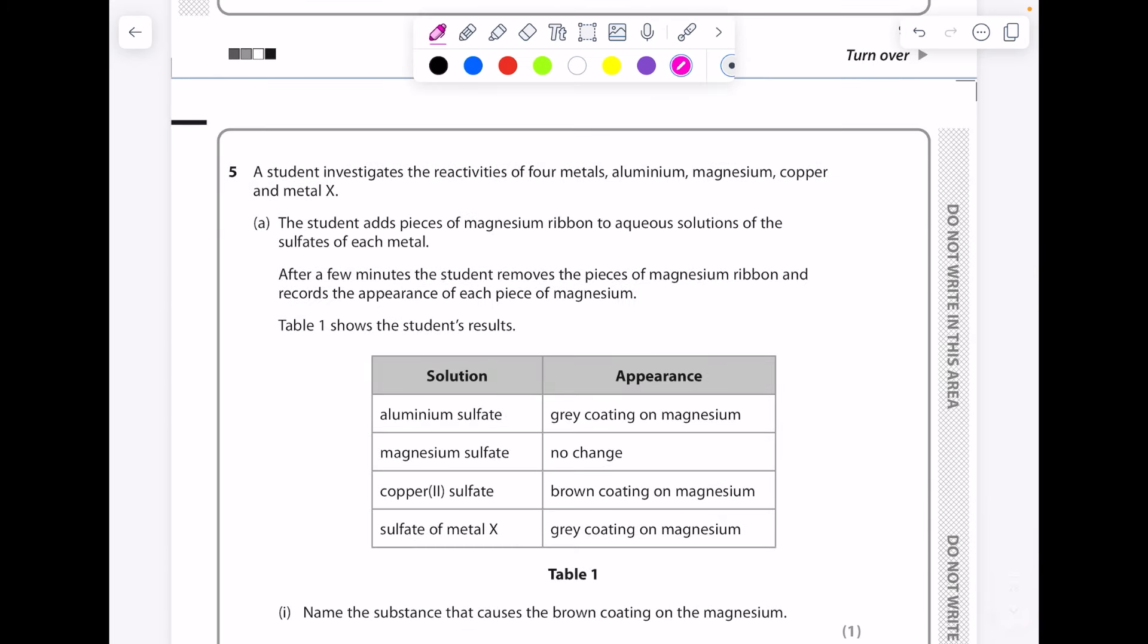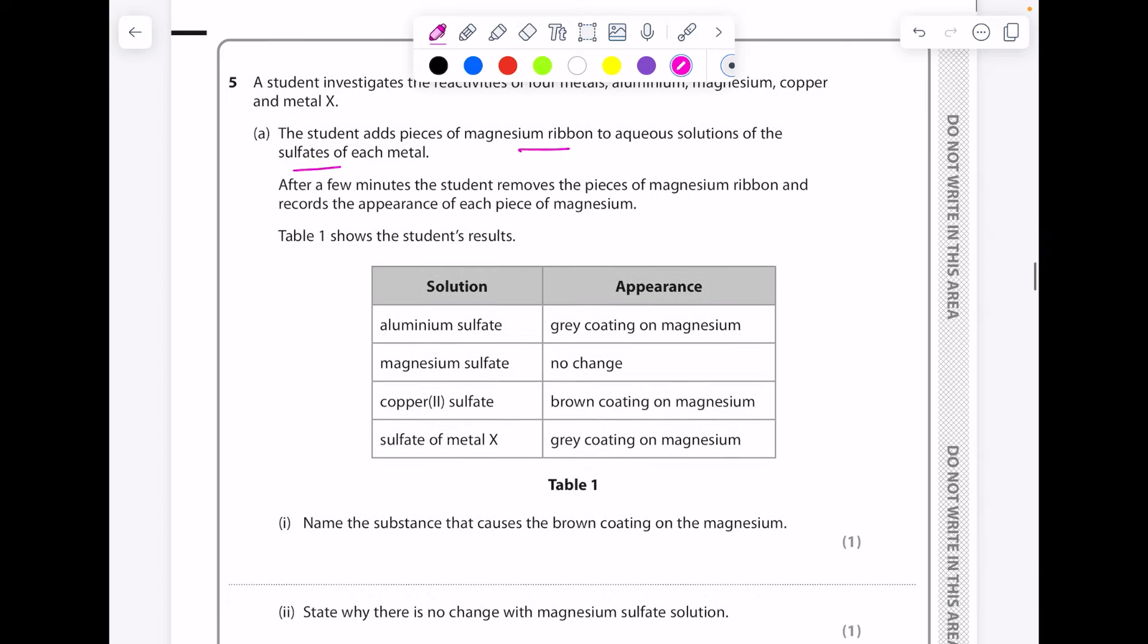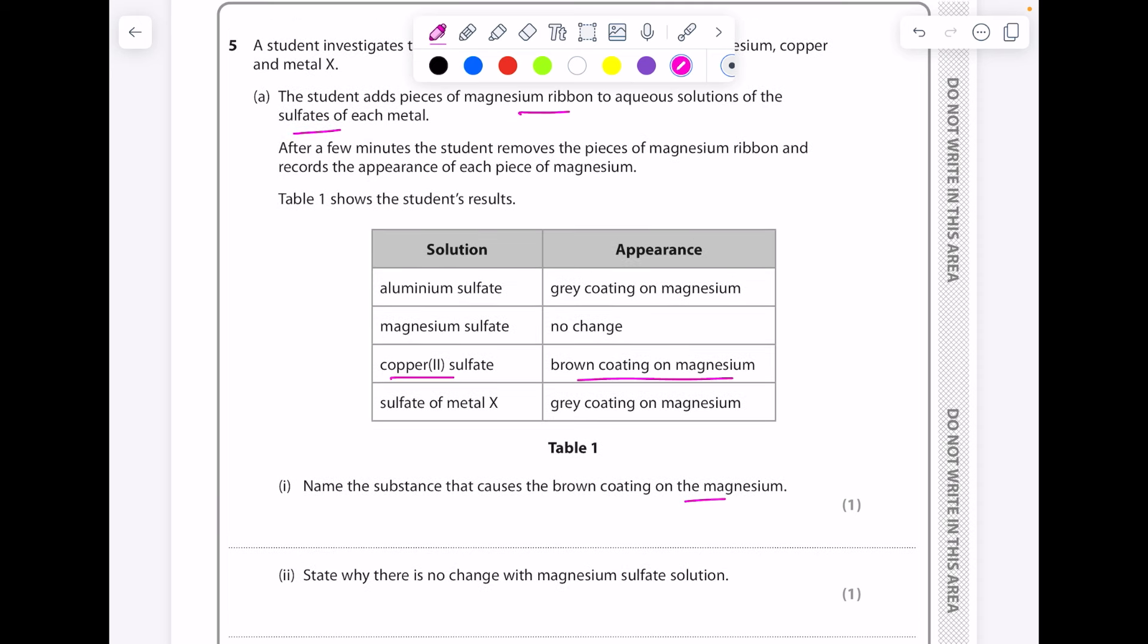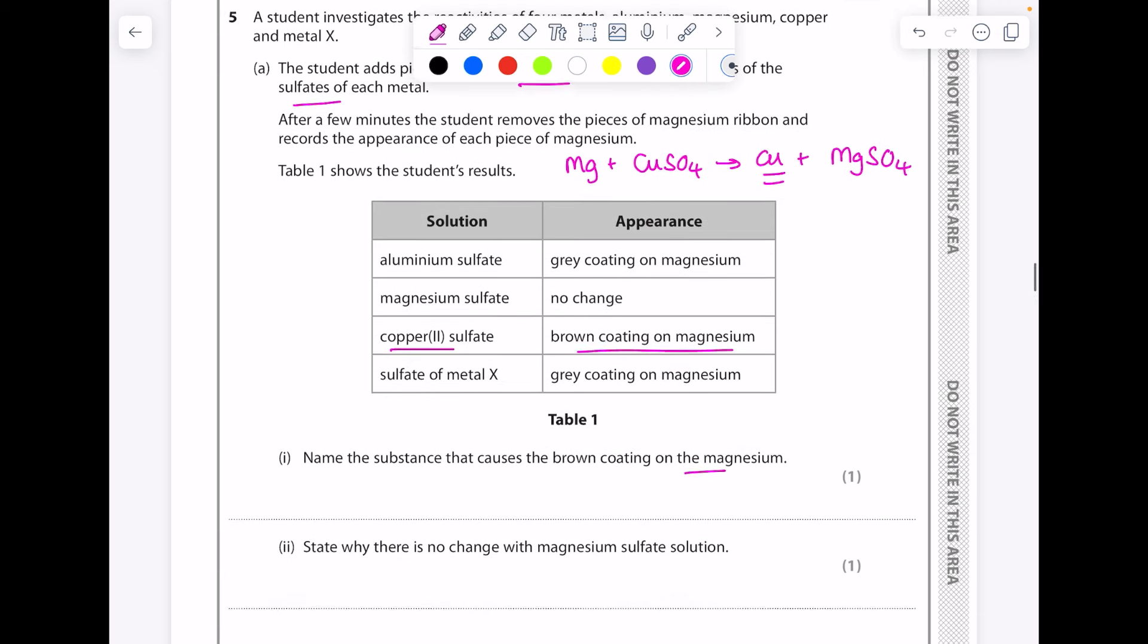A student investigates the reactivities of four metals: aluminum, magnesium, copper, and metal X. The student adds pieces of magnesium ribbon to aqueous solutions of sulfates of each metal. After a few minutes, the student removes the pieces of magnesium ribbon and records the appearance. Table 1 shows the results. Name the substance that causes the brown coating on the magnesium. That's when the magnesium reacts with copper sulfate to form a displacement reaction: copper and magnesium sulfate. So the brown coating is likely to be copper.